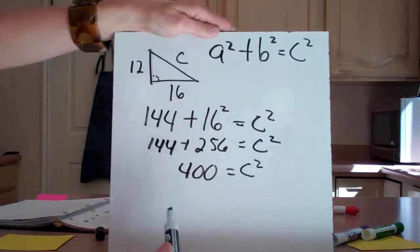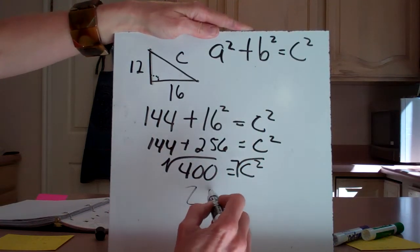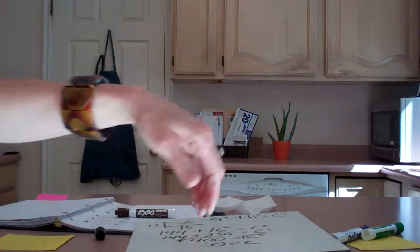Back to my problem, let's solve this problem. Square root of 400 is 20, equals C.